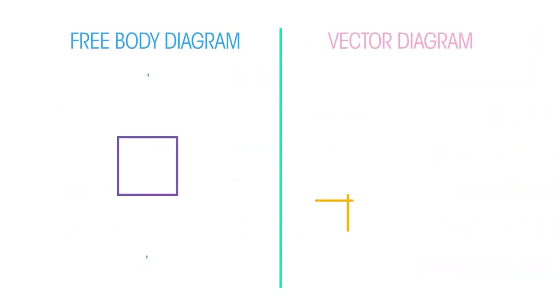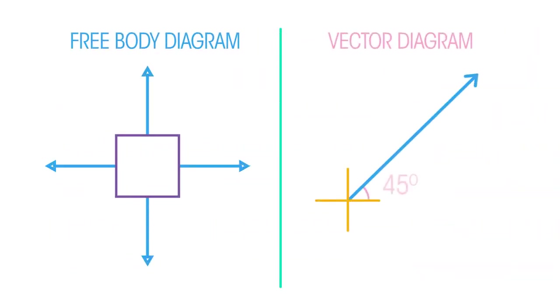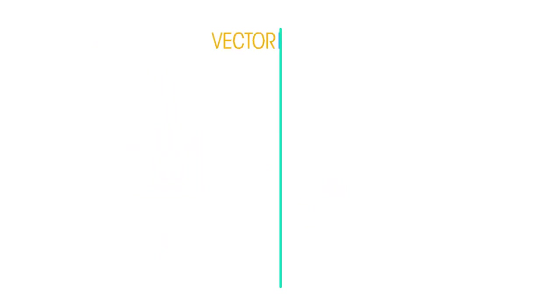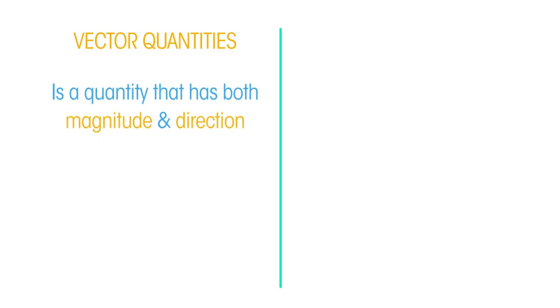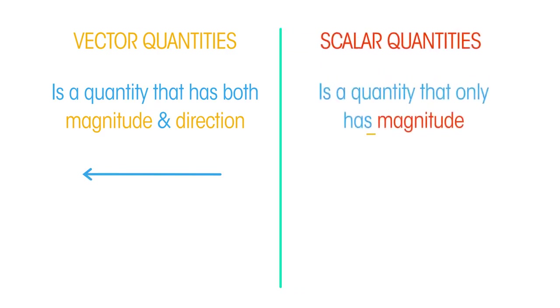In this video, we will learn how we can use free body and vector diagrams to describe forces. Forces are vector quantities because they have both magnitude and direction and so can be represented by an arrow. Scalar quantities have only magnitude and no direction.